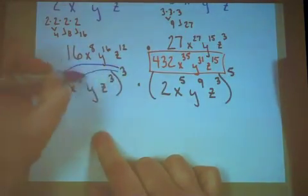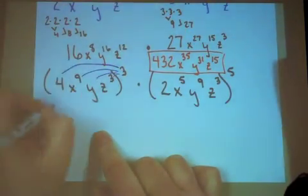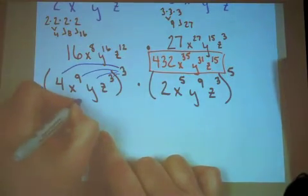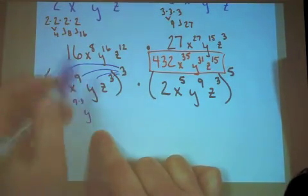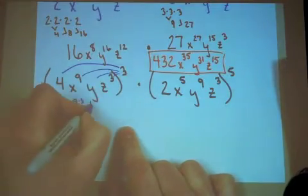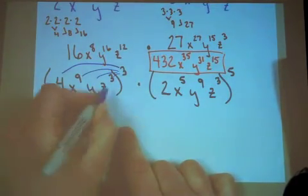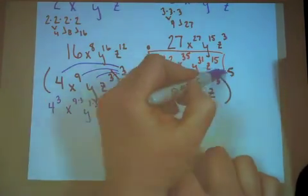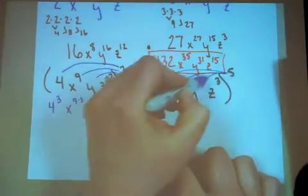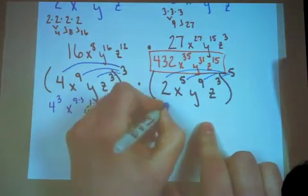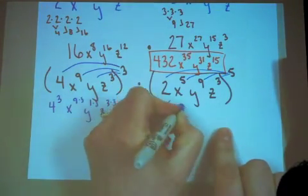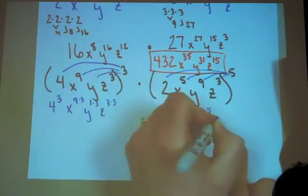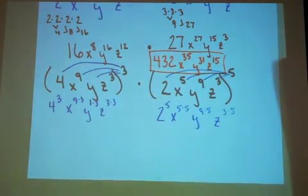Take this cube, distribute it through the entire quantity. So I need to do 4 cubed, x to the 9 times 3, y to the invisible 1 times 3, and z to the 3 times 3. On this problem, we'll be distributing that 5. So we'll be finding 2 to the 5th, x to the 5 times 5, y to the 9 times 5, and z to the 3 times 5.